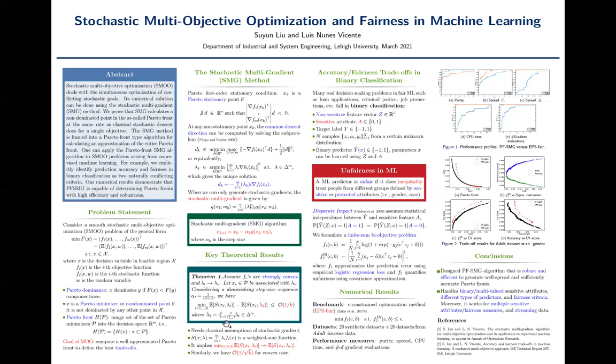And to prove this theorem, we also need some classical assumptions for the stochastic gradients. And in the theorem, the optimality gap is measured using the weighted sum function capital S. And it basically means that the sequence of iterates generated by the algorithm will finally converge to a Pareto minimizer X star here.